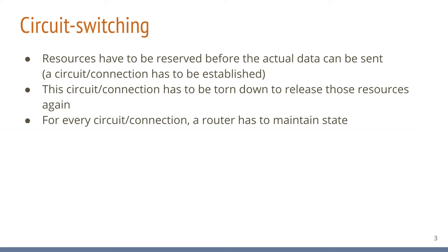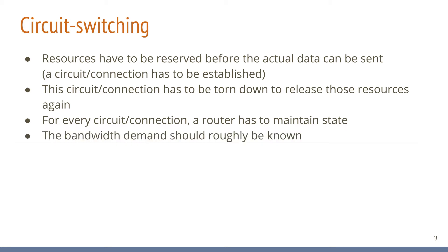Also, before fetching those objects, it is not known to the browser how much bandwidth it would sensibly need to get those objects within a reasonable amount of time. Think for yourself: how much bandwidth would you reserve in order to download your emails? What would be a sensible amount? And why would a network operator trust our judgement and reserve that much bandwidth for us? It appears circuit switching is not a good basis to build the internet upon.